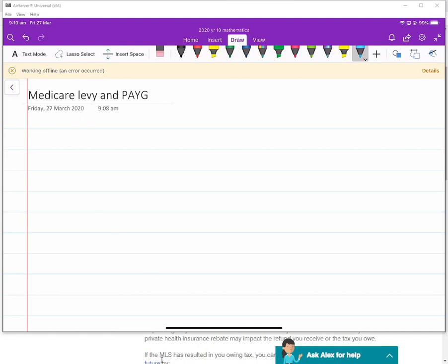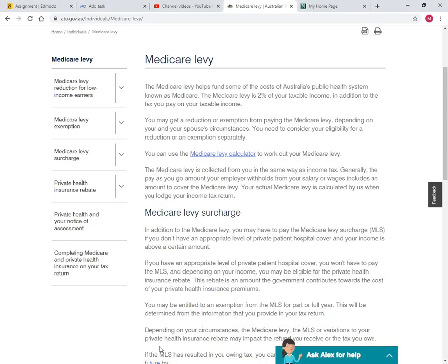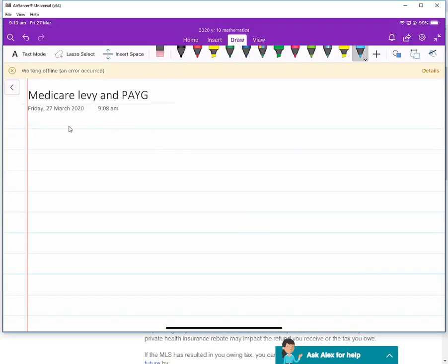So firstly Medicare Levy. I just typed it up on the computer. Medicare Levy is currently 2% of your taxable income. I know your textbook says 1.5%, however it's been 2% for the last few years. Medicare Levy helps to pay for all the health services in Australia. Medicare Levy is an extra tax to only Australian citizens.